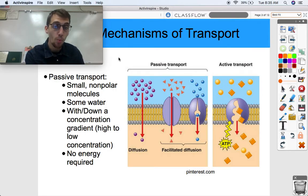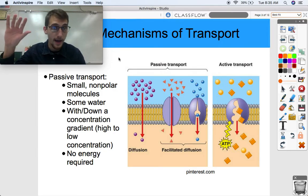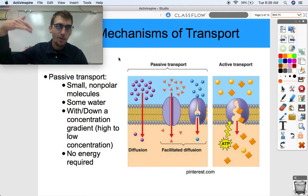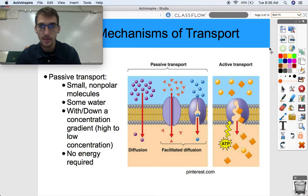It moves with or down a concentration gradient, moving from high to low concentration, meaning that it's going to move the natural way that molecules move from areas of high to low concentration, just like paddling down river or riding your bike down a hill. It's just going with the current. And finally, as I said, since this is passive transport, there is no energy required on the part of the cell in order to move molecules in this way.